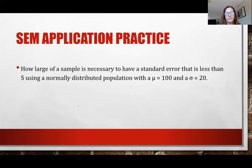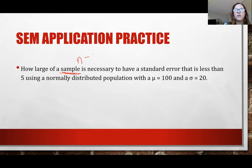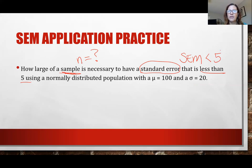Here's the type of question you might see: How large a sample is necessary to have a standard error less than 5, using a normally distributed population with a mean of 100 and a standard deviation of 20? We're looking for sample size N, with the condition that SEM is less than 5.